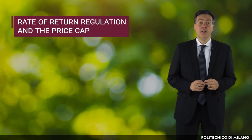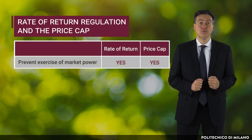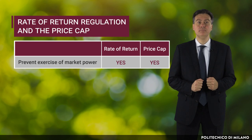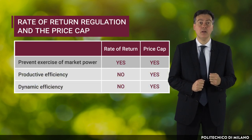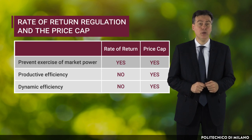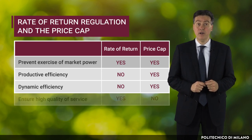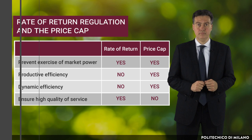The rate of return regulation and the price cap are two common policy tools used by regulators to correct price distortions caused by market power. Their key differences are that while the rate of return approach does not encourage productivity nor dynamic efficiency, a price cap does — and this can be particularly relevant for long-term investments, at least in cost reduction, but not in innovation. However, the rate of return can ensure a high quality of services that is not guaranteed by a price cap.